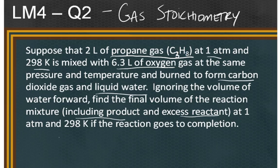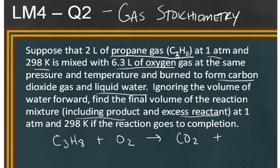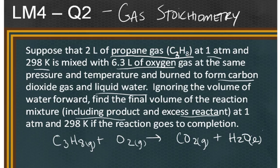They told us what the reactants were: propane, C3H8, plus oxygen to give carbon dioxide and water. At 1 atmosphere and 298 Kelvin, which is room temperature, propane exists as a gas, oxygen exists as a gas, carbon dioxide exists as a gas, and water is a liquid. Now we need to balance this equation. To balance carbon I need 3, to balance hydrogen I need 8, and saving oxygen for last, I work out that it's 5 O2.